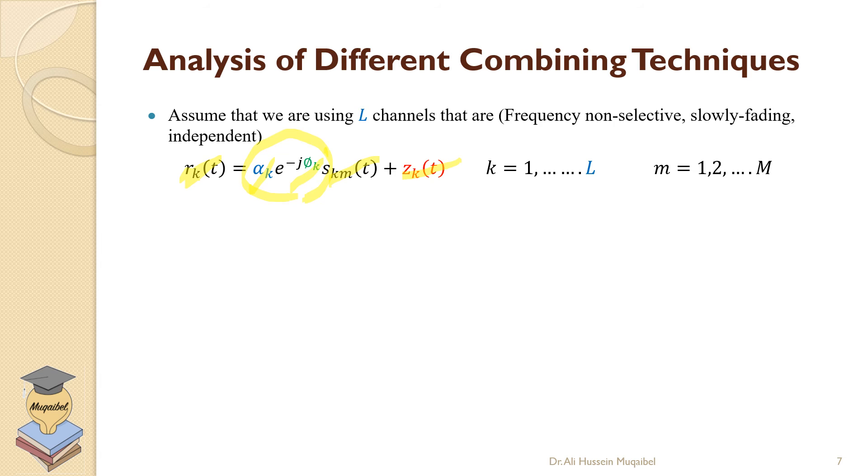m here is used to represent the different symbols. Capital M is representing the different symbols. Remember that in some books like Andrea Goldsmith, we use capital M to represent the diversity order.